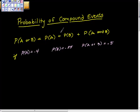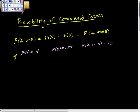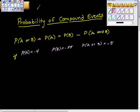So, probability of compound events — this is what we've been talking about. The probability of event A or event B happening is equal to the probability of A plus the probability of B. This should be minus the probability of both things happening.